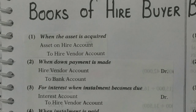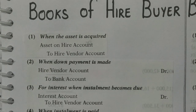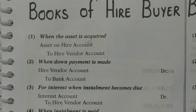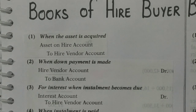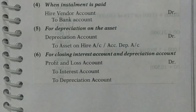The third entry is making the interest due when the installment becomes due. When that particular time to pay the installment arrives, first the installment is made due, and then the interest is made due. Interest is an expense — debit all expenses. So interest account debited. And who becomes the creditor by the amount of interest? The hire vendor. So: interest account debited to hire vendor.